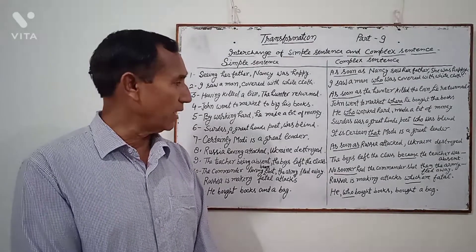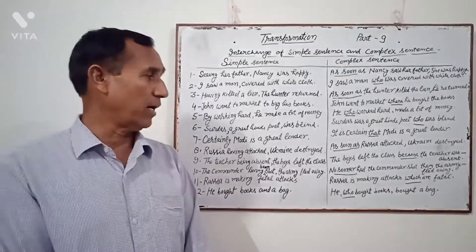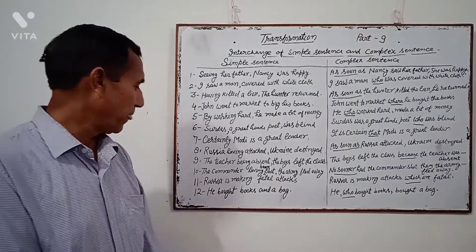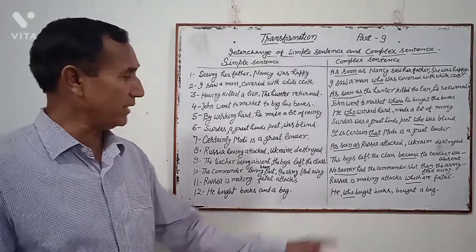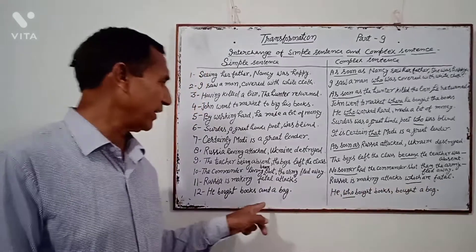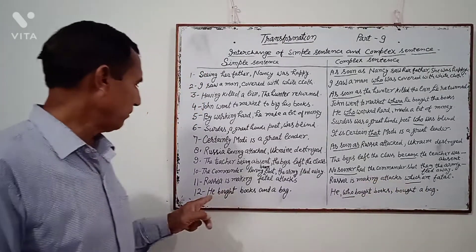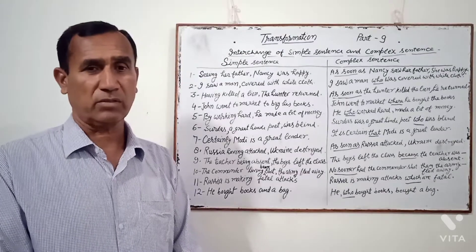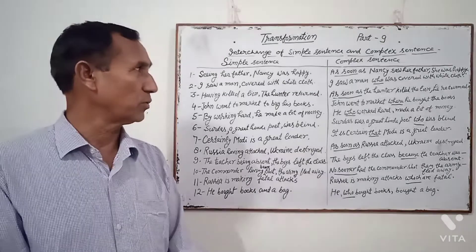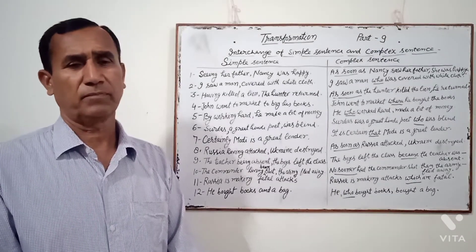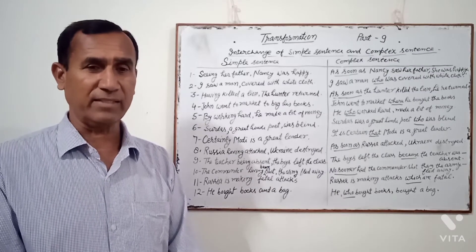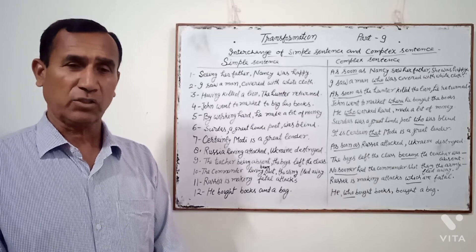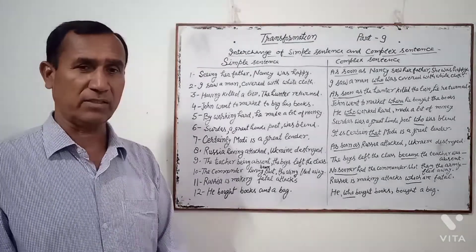Complex: "Russia is making attacks which are fatal." Simple: "Russia is making fatal attacks." Complex: "He who bought books bought a bag." Simple: "He bought books and a bag." So I think you have understood in what way we change simple sentences into complex sentences. In the same way, we apply the rules of simple sentences to complex sentences. By using subordinating conjunctions, we make a simple sentence from a complex sentence.